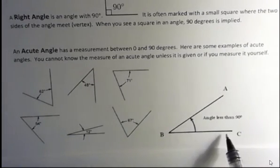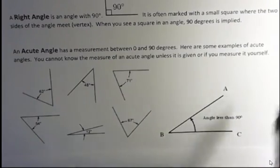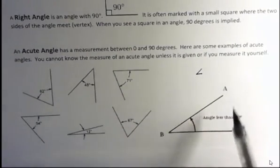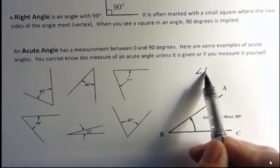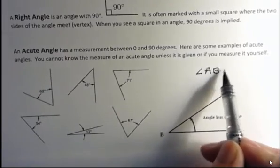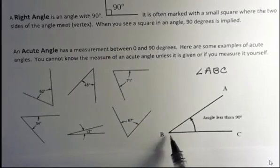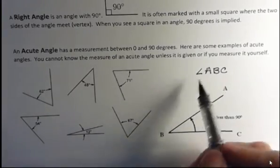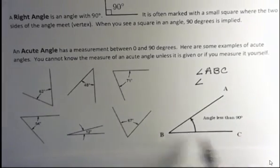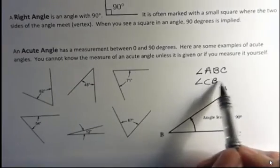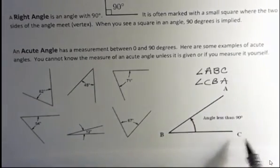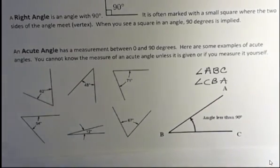We can also call an angle by its three letters, and if we do, we use this little angle symbol, and this is angle ABC. Whenever I call an angle out, the vertex has to be the middle letter. So this could also be called CBA. That's the same angle. It doesn't matter which side you come from, but the B has to be in the middle.